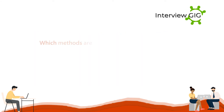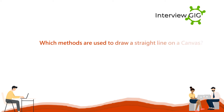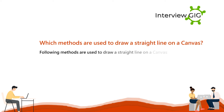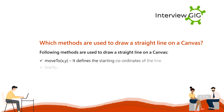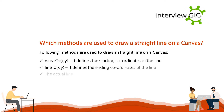Which methods are used to draw a straight line on a canvas? The following methods are used to draw a straight line on a canvas. The actual line is drawn with the help of a method like stroke.